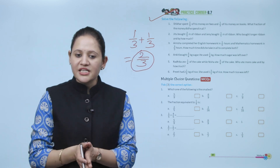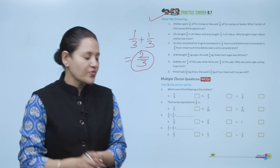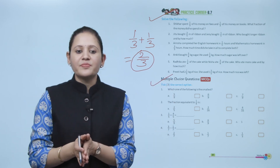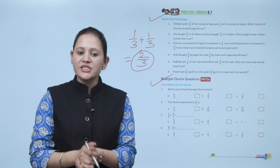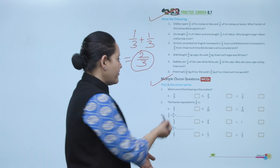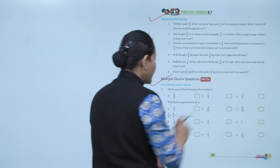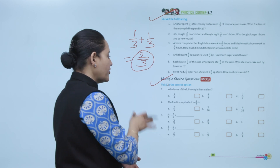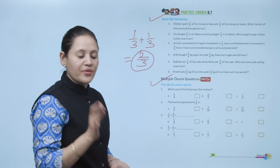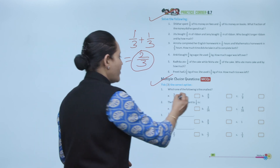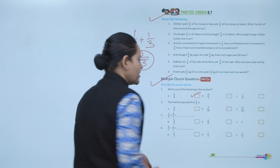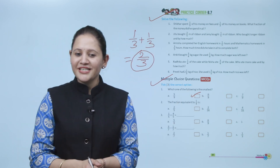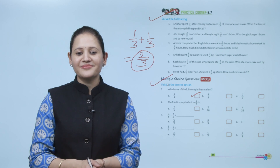Multiple choice question: which of the following is smallest — 5 by 9, 6 by 9, or 7 by 9? These are like fractions, so the fraction with the smallest numerator is the smallest. Therefore 5 by 9 is the smallest. Here we end the chapter — I hope you understand it well. Now go and practice it.